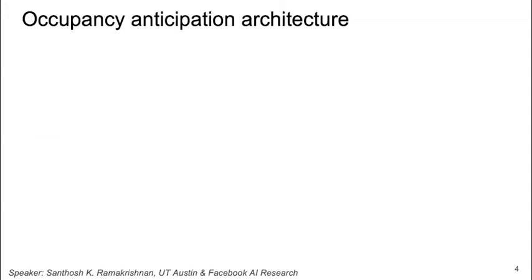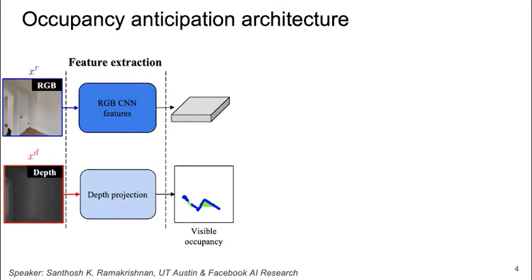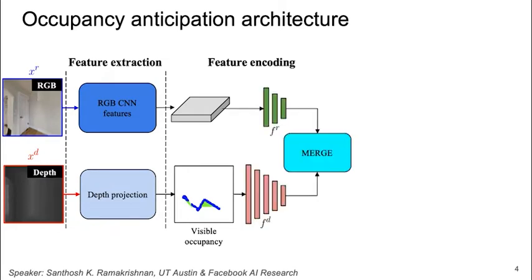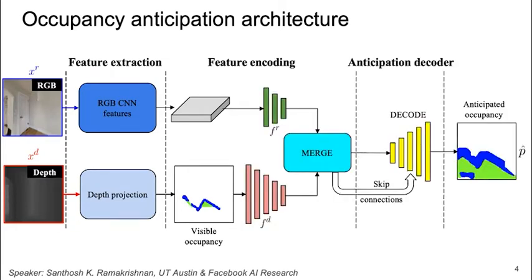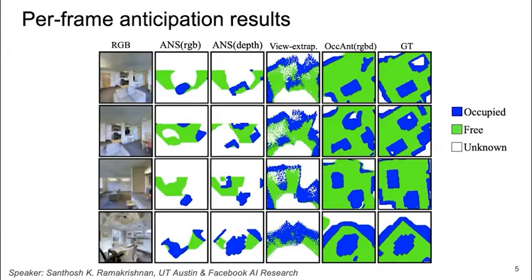In order to do this prediction, we introduce our Occupancy Anticipation Architecture. It extracts semantic and geometric features from RGBD inputs, encodes them using a unit, and performs joint inference to anticipate occupancy. The model outputs are supervised with the ground truth occupancy derived from training data. When compared to past approaches, our method achieves significantly higher coverage of the occupancy map while maintaining high-quality predictions.